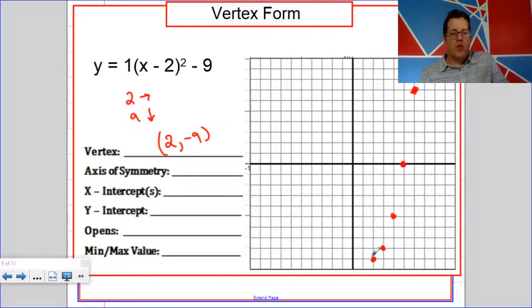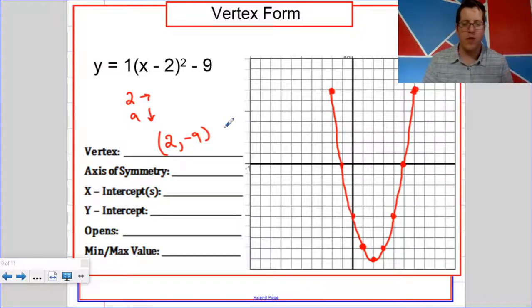And obviously you go until you run out of space. Then you return to your vertex and you do the same thing in the opposite direction. Back one, up one. Back one, up three. Back one, up five. And back one, up seven. And that's how you make your graph. And there it is.